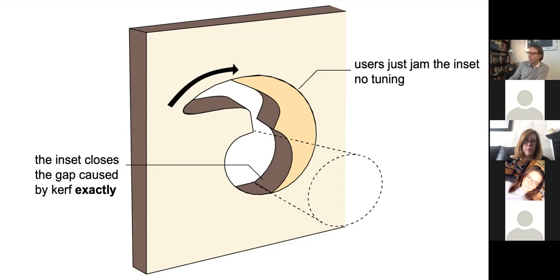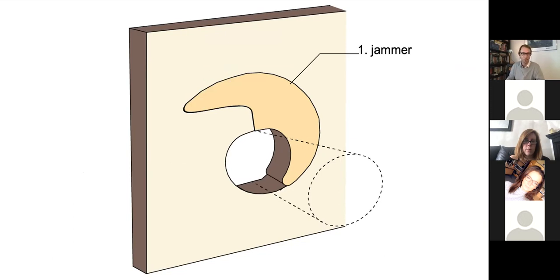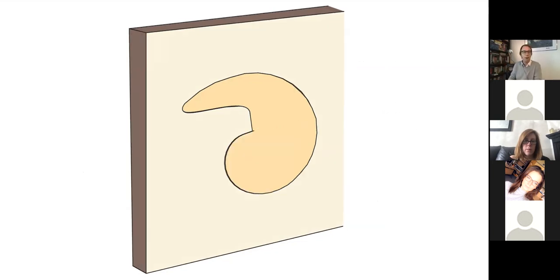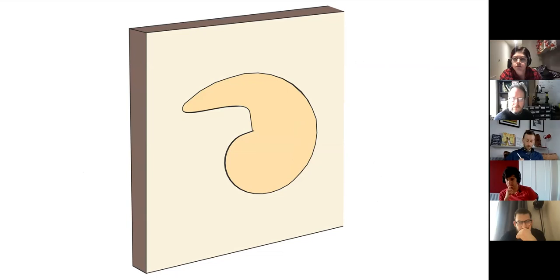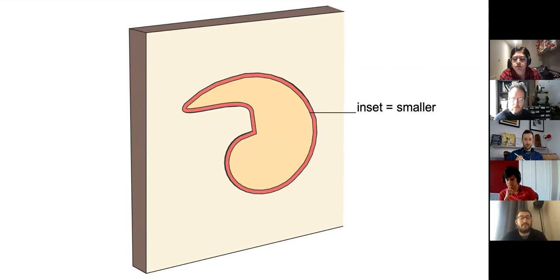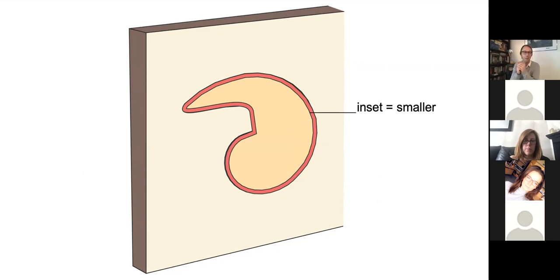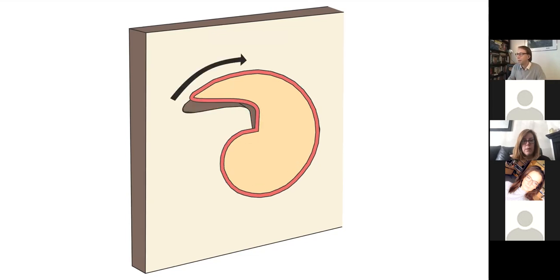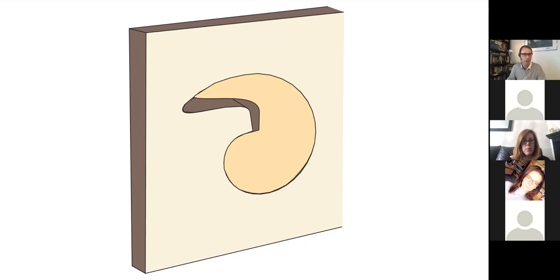Technically, that moon-shaped inset consists of two designed elements: the jammer, which is the curvature on the top, and an inverse scalar, which is the curvature on the inside. The jammer holds that inset in place. The shape of the jammer is derived from a nautilus spiral — a self-similar spiral — where as kerf is applied to the model, you just offset the spiral, the curvature stays the same, but the shape gets smaller. When you then rotate it in place, because the curvature is the same, there's always going to be a moment where it locks — where it jams in place.